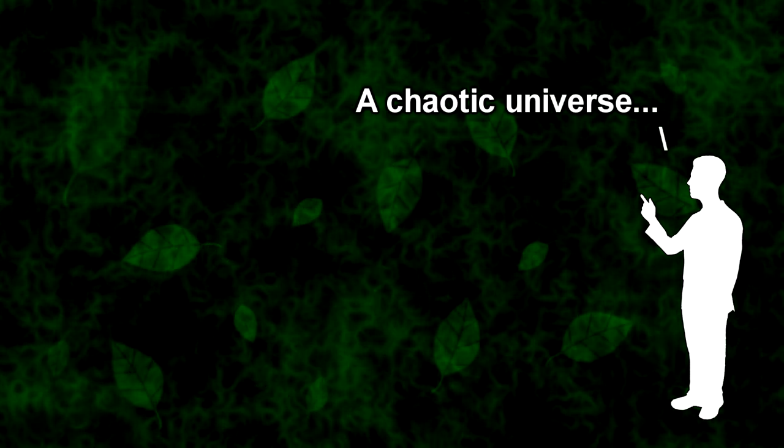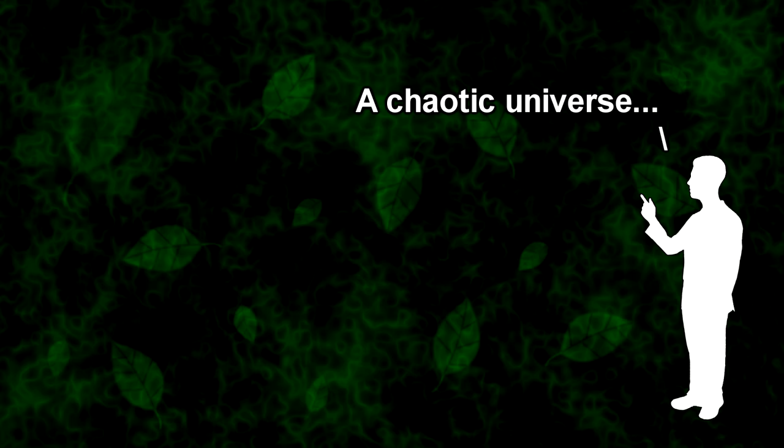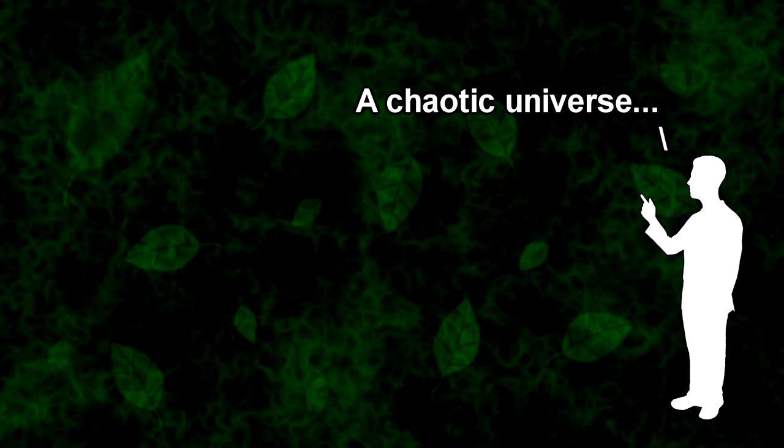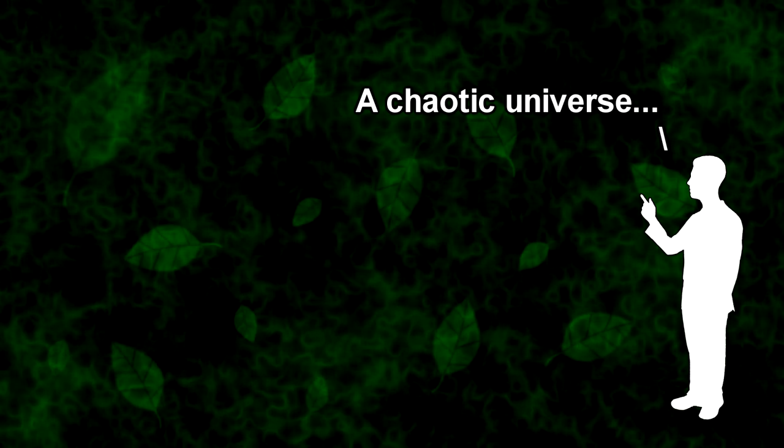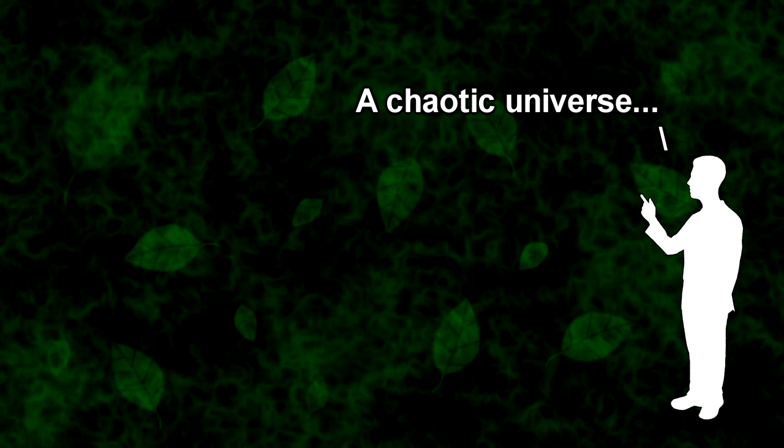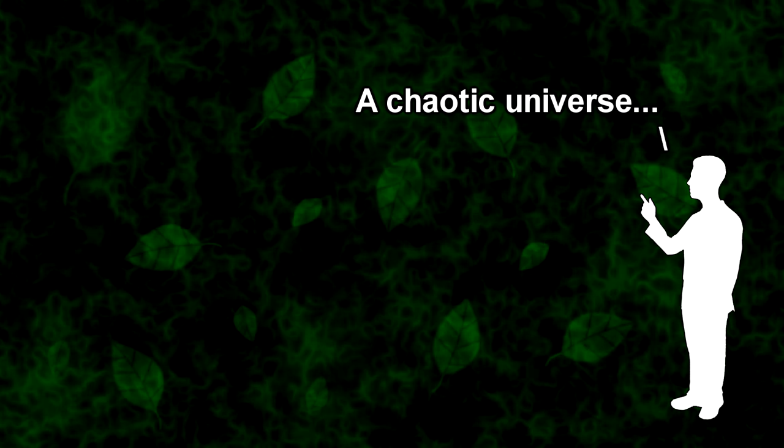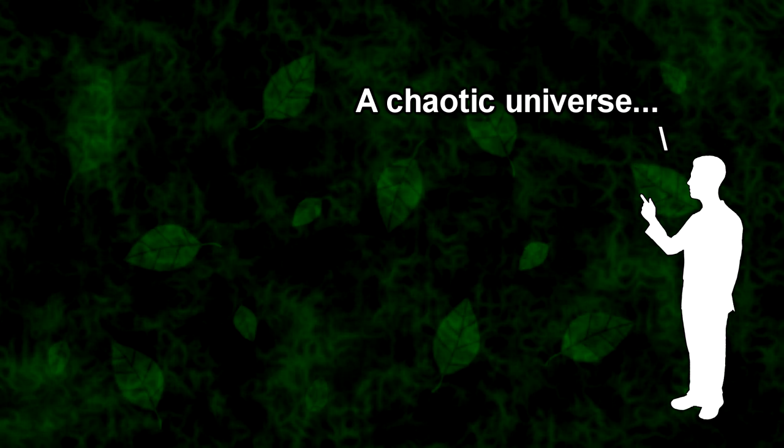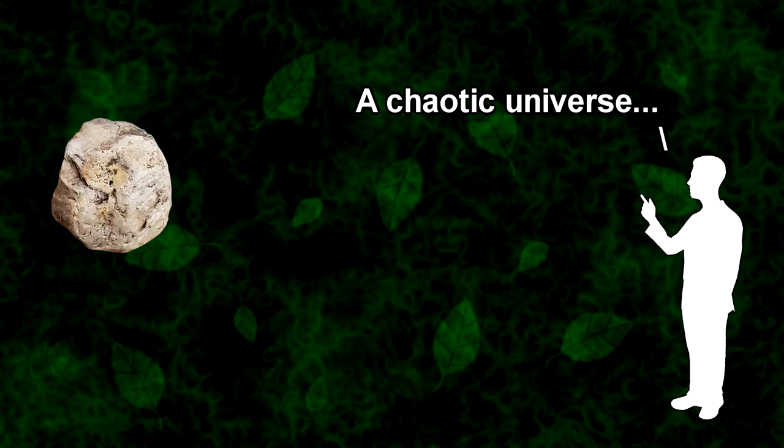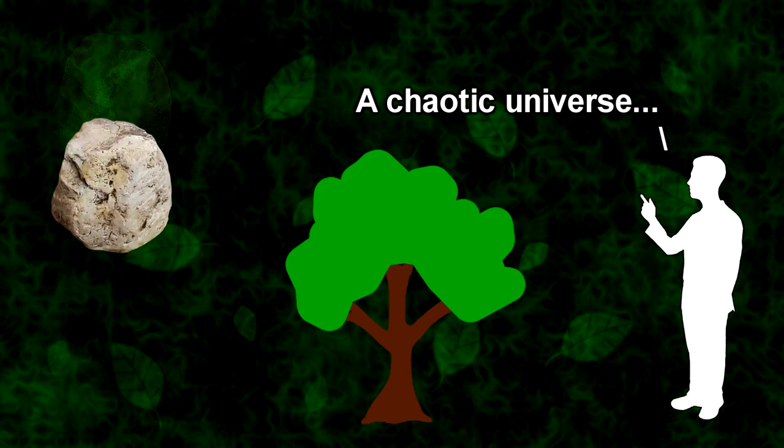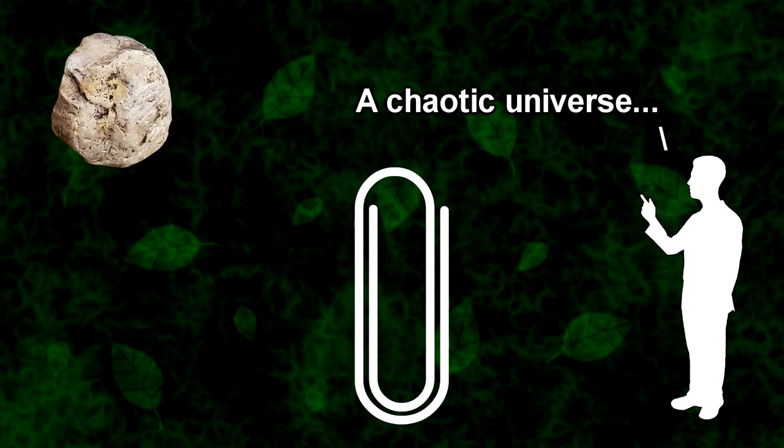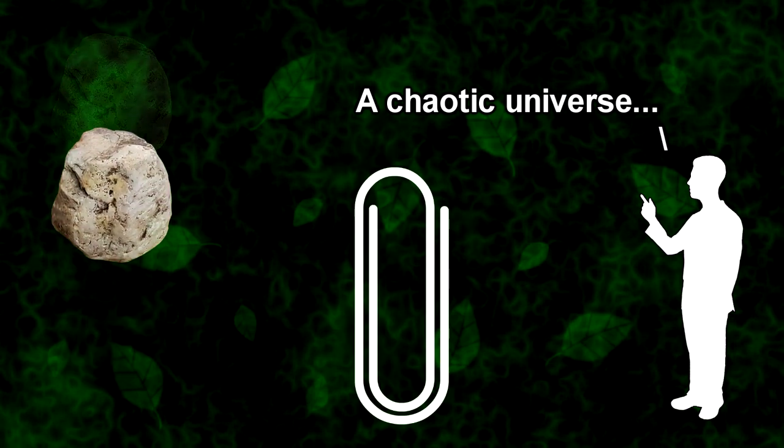When apologists attempt to describe a completely chaotic universe, when they try to explain what kind of universe they would expect to see if there was no God, the universe they describe actually looks a lot like the one we live in. The only differences they propose are things like, sometimes rocks fall upward, sometimes trees turn into giant paperclips, that sort of thing. A cartoon version of what is essentially still just our universe.